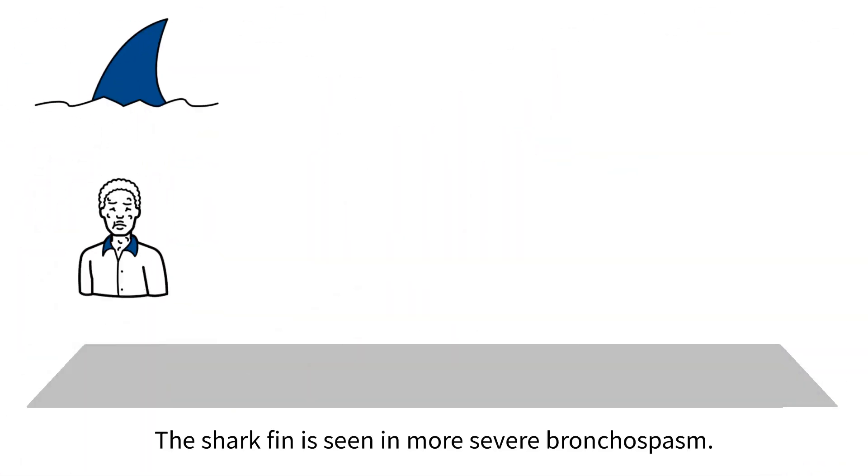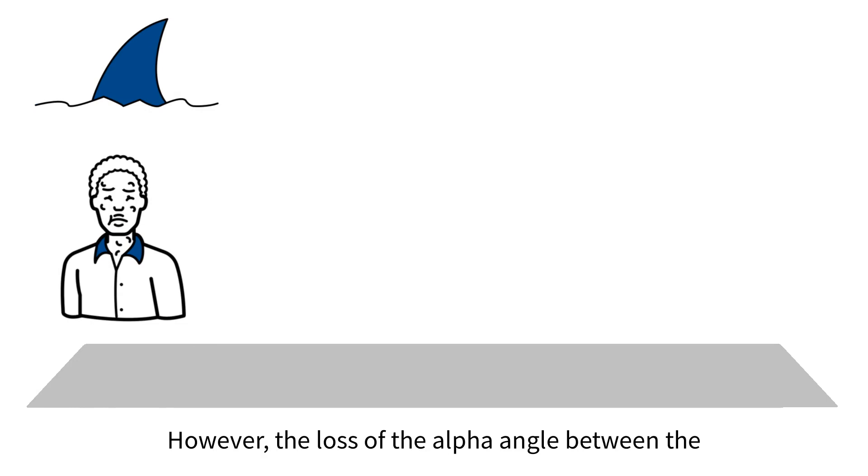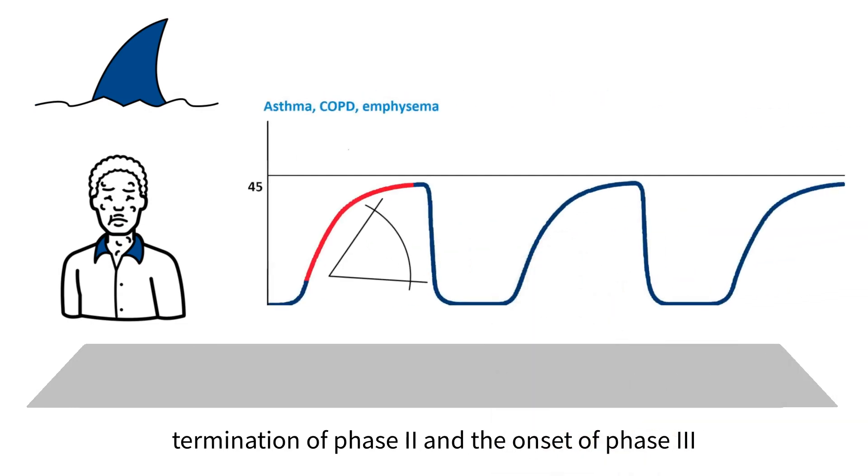The shark fin is seen in more severe bronchospasm. However, the loss of the alpha angle between the termination of phase 2 and the onset of phase 3 is the hallmark of bronchospasm.